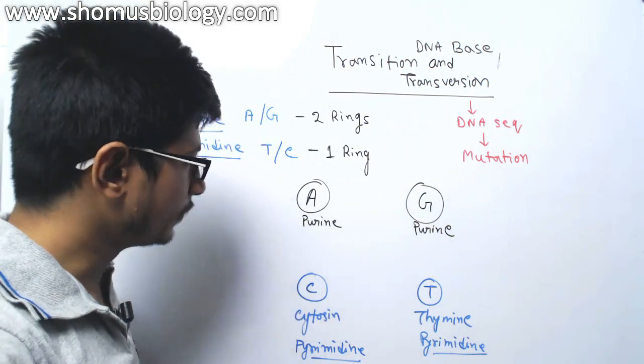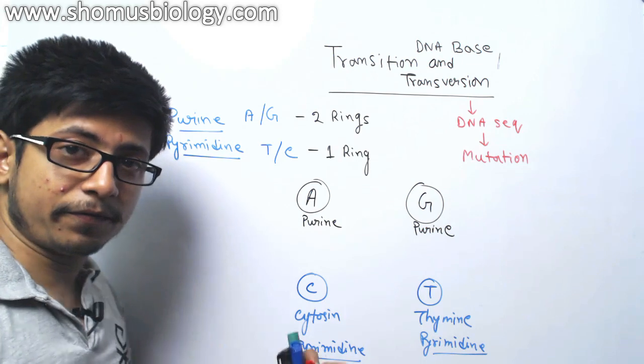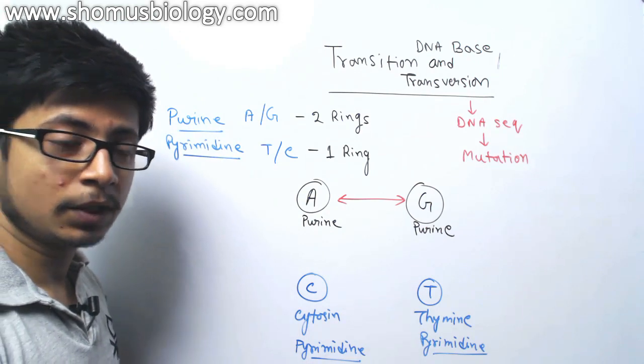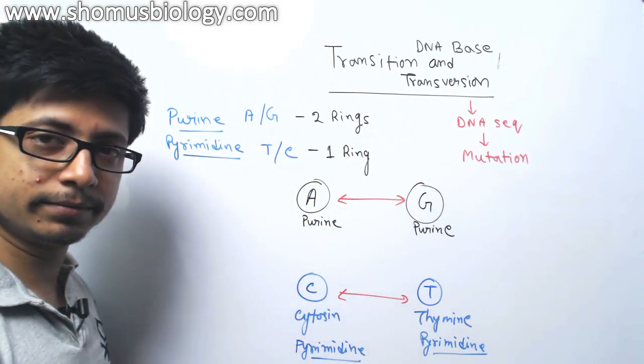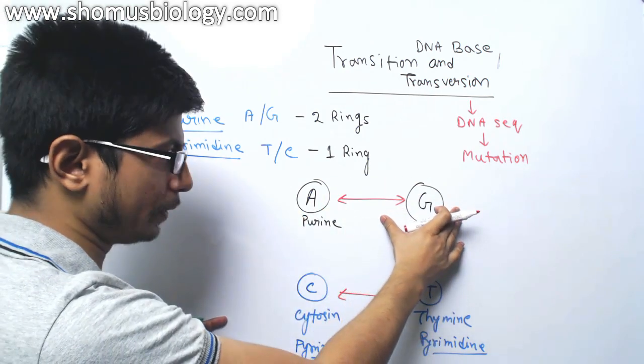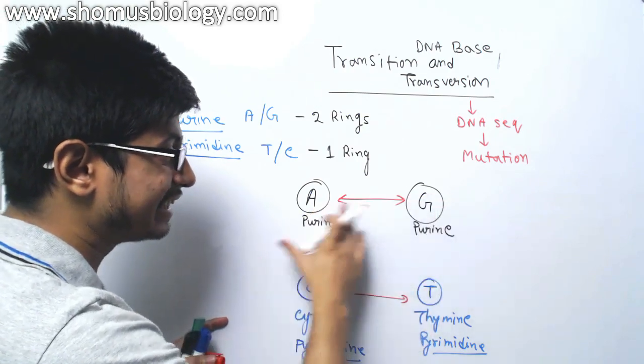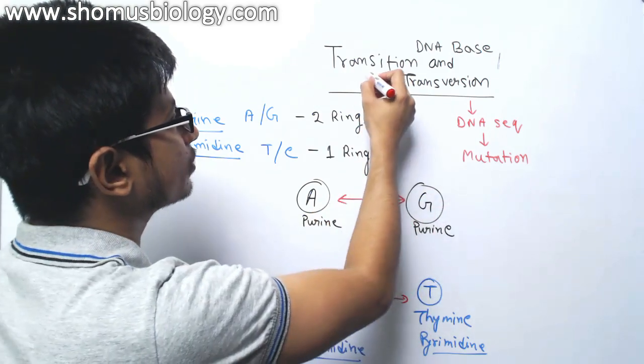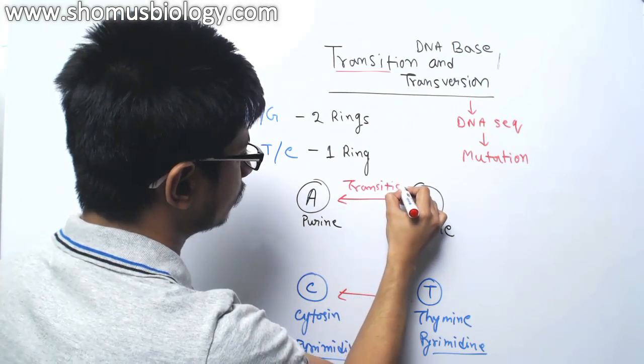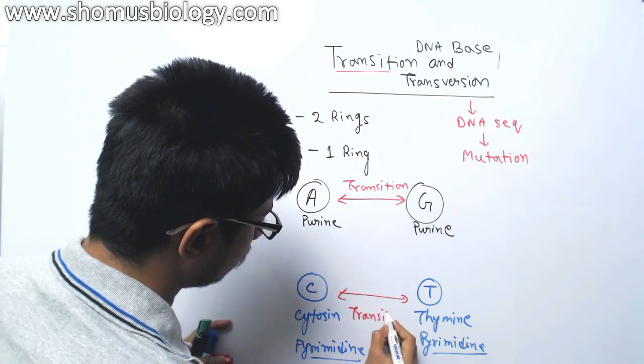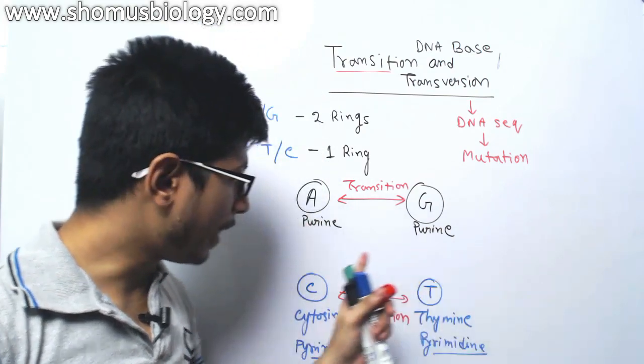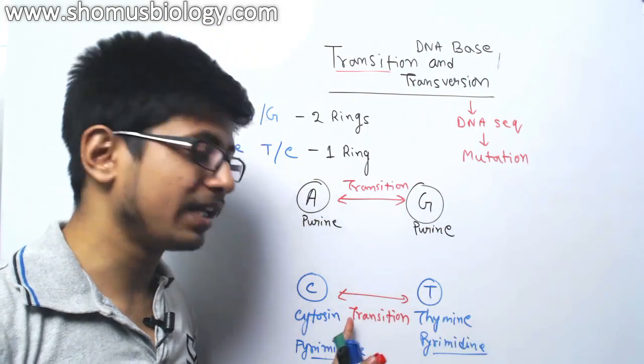Now look at the idea. If the base shift is between a purine and a purine or between a pyrimidine and a pyrimidine, between the same type, a purine base is substituted with another purine. For example, A is substituted to G. This type of change is known as transition. This is transition. This is also transition. Purine substituted with one purine, pyrimidine substituted with another pyrimidine base, known as transition.